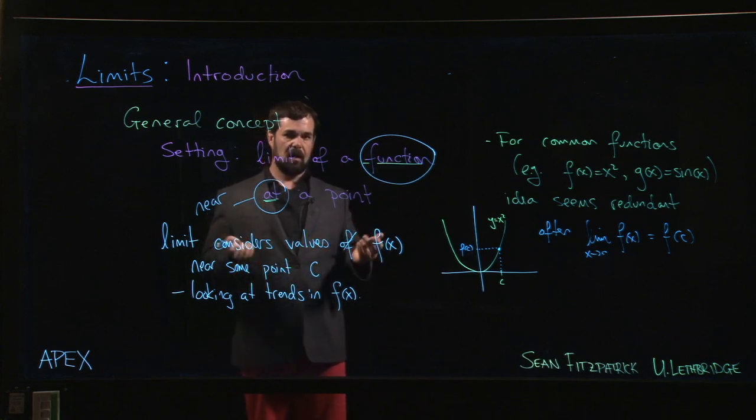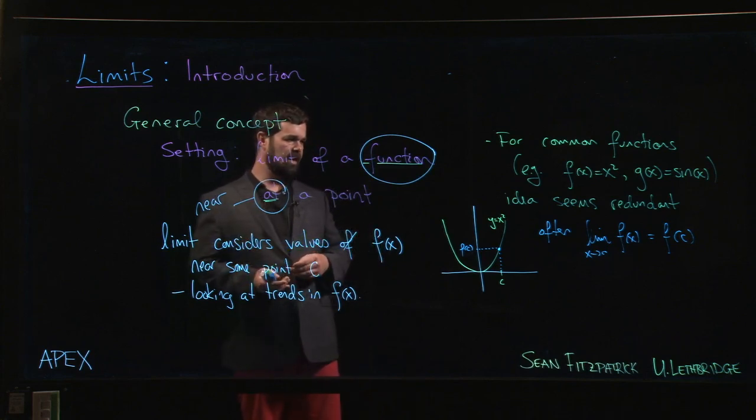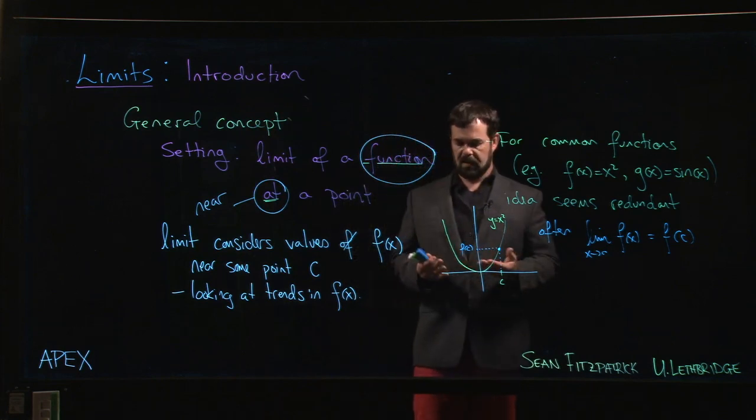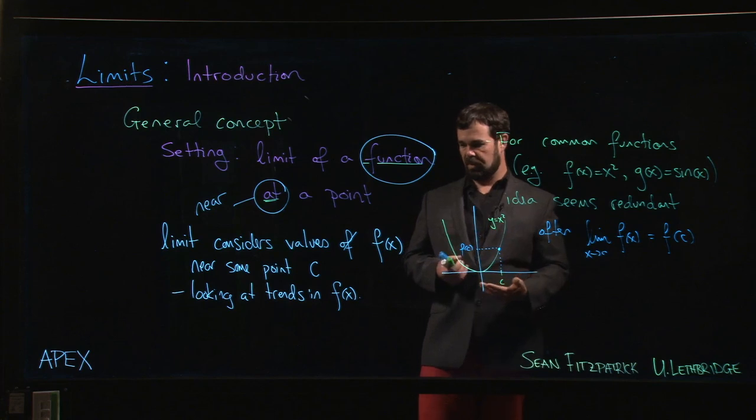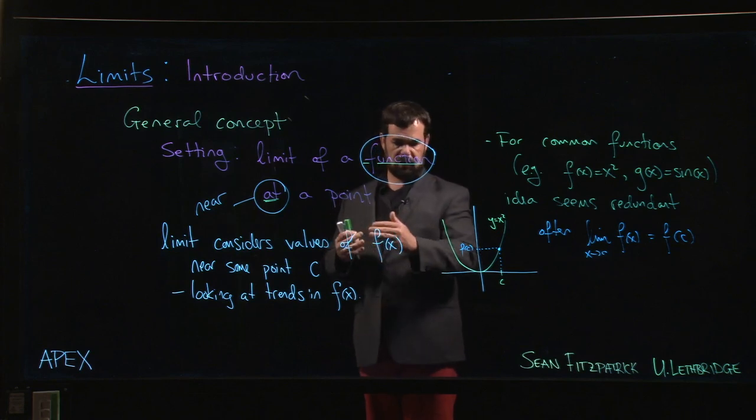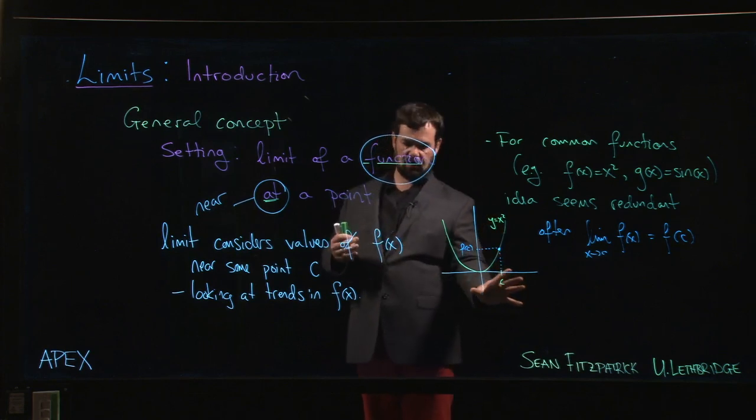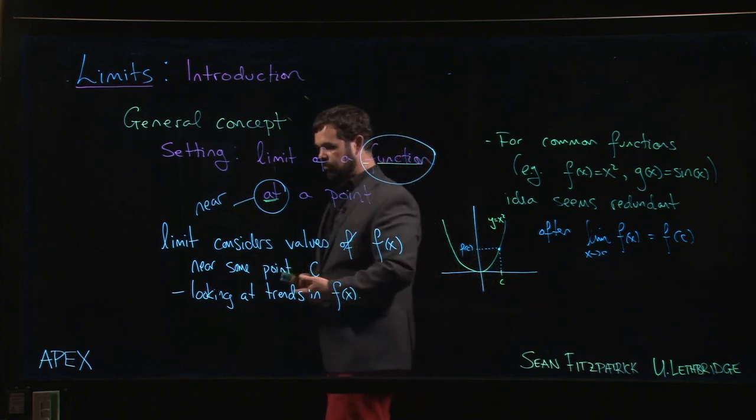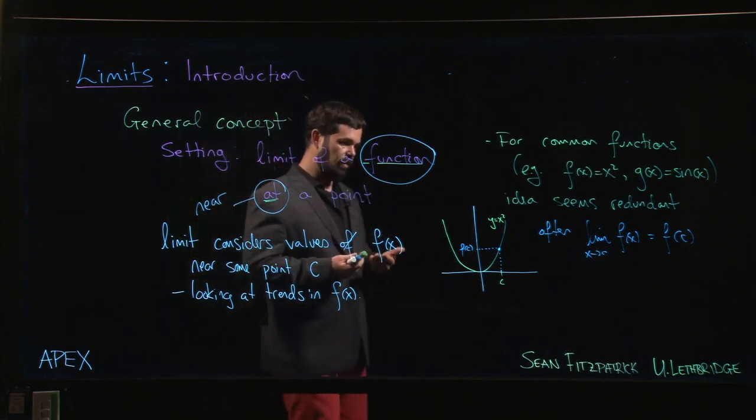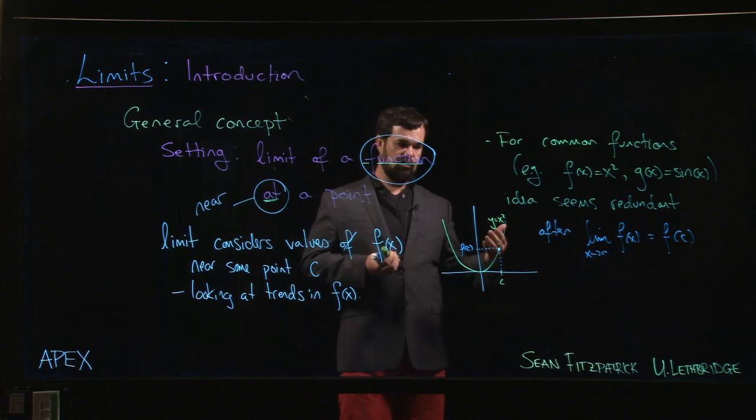And even historically, people tended to think of functions in terms of their graph. They didn't make this distinction between a function as this kind of rule that associates x values to y values. They didn't distinguish between that and the graph and the different ways of describing functions. They were all kind of viewed as one and the same thing. And then you don't necessarily encounter situations where this idea of a limit comes up.